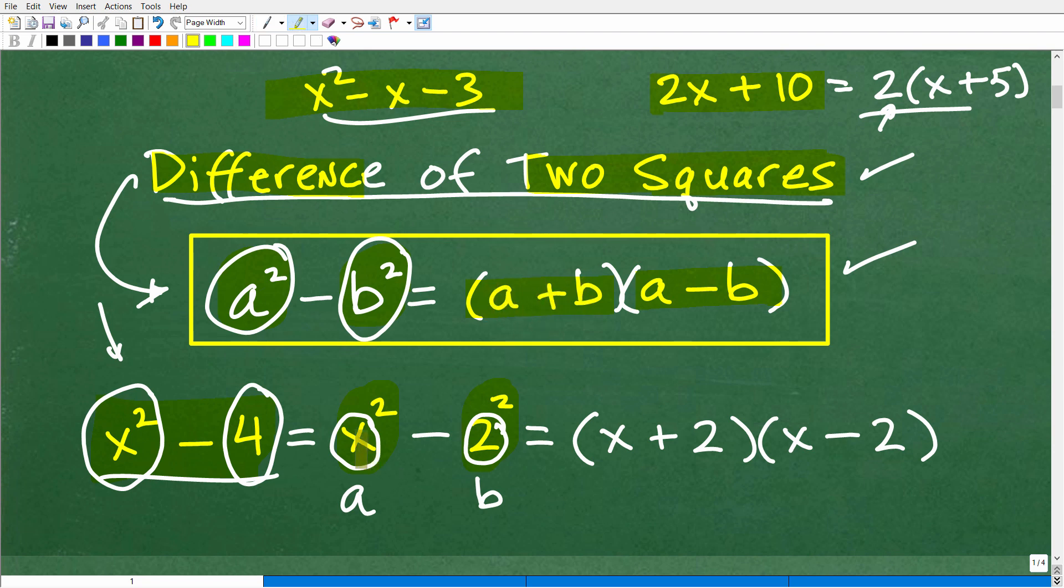And now we simply just go ahead and follow the pattern, a plus b. In this case, it would be x plus 2, times a minus b, which, of course, would be x minus 2, right? So x squared minus 4, we can factor this as x plus 2 times x minus 2. And you're going to see the difference of two squares come up pretty frequently in algebra.